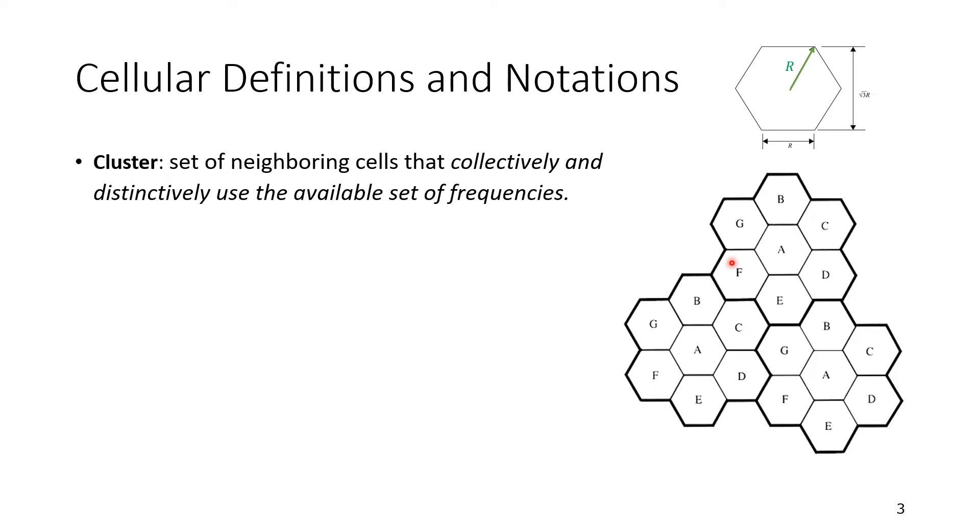When we divide the coverage area by using cells, a group of cells is called a cluster. You can see here that we have bold lines to identify a cluster, another cluster. There are three clusters here. The definition of the cluster is a set of neighboring cells that collectively and distinctively use the available set of frequencies. So all the frequencies will be used completely here, collectively, and we'll have them distinctive, which means every one of them will have different frequency. All these frequencies will be reused in another cluster.